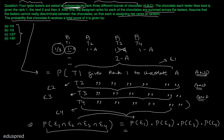Now we need to figure out these individual probabilities. The probability of E1 — that tester 1 gives rank 1 to chocolate A — is 1/3, since the tester assigns ranks at random and there are three choices. Similarly, the probability that tester 2 gives rank 1 to chocolate A is 1/3, and likewise 1/3 for tester 3 and tester 4. Therefore, the total probability is (1/3)^4 = 1/81. So option D is the final answer.